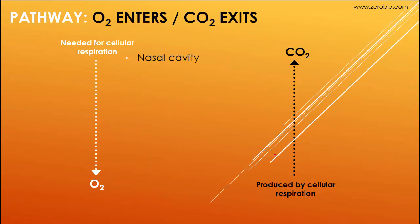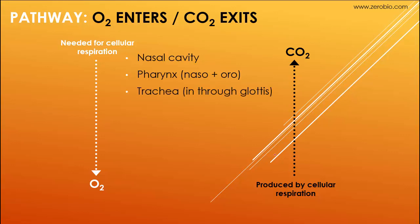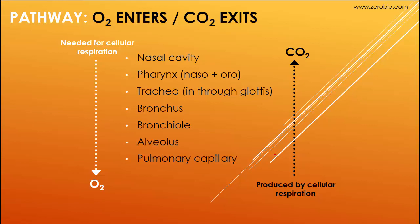Here's a flow chart of how oxygen enters and CO2 exits. O2 comes in through the nasal cavity, down the pharynx — nasal pharynx then oral pharynx — down into the trachea through the glottis, then splitting into the right or left bronchus. The bronchi split into the smallest branches, the bronchioles, which lead to an alveolus. From the alveolus, oxygen diffuses across into a pulmonary capillary and into the bloodstream. CO2 travels in the reverse direction — from the pulmonary capillary into the alveolus, then up through the bronchiole, bronchus, trachea, pharynx, and out through the nasal cavity.